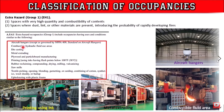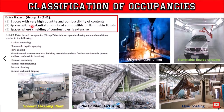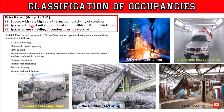To summarize: light hazard, ordinary hazard group 1, ordinary hazard group 2, extra hazard group 1, extra hazard group 2. Extra hazard group 2 is a space with very high quantity and combustibility of content, a substantial amount of combustible or flammable liquids, and where shielding of combustibles is extensive, raising the heat release rate significantly.